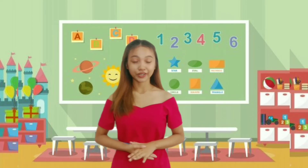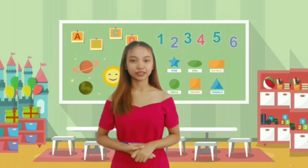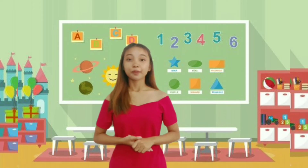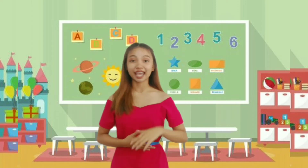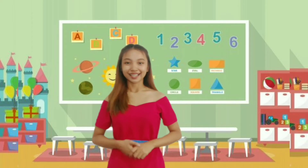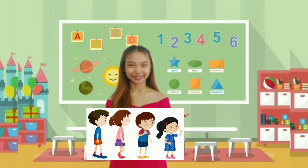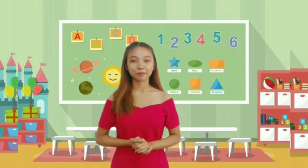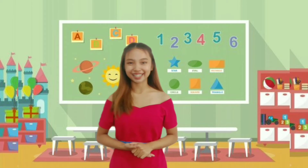Let's have a review of what we have discussed in our past lesson. In our past lesson, I discussed identifying patterns. Pattern is a repeated arrangement of numbers, shapes, colors, and so on. Again, what do you observe in the picture? Very good! What pattern do you observe in the picture? Very good! You remember our past lesson well. Give yourselves a big three claps!